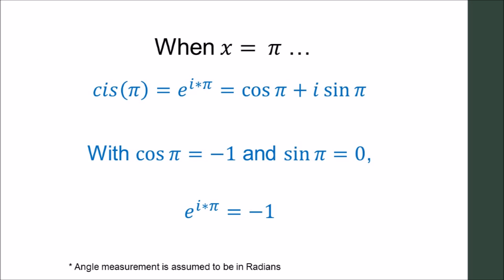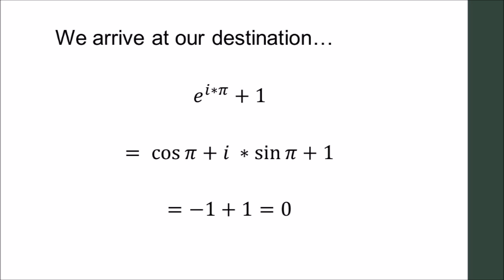With the cis function established, let's calculate the cis of pi. Assuming that we are working with radians, the cosine of pi is negative 1, and the sine of pi is 0. Hence, e to the i times pi is negative 1, and if we add 1 to it, we get the final result of 0, proving Euler's identity.